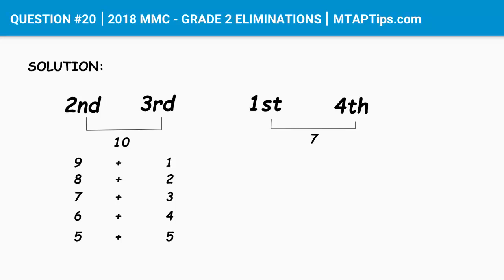Let's take a look at the other side for the first and fourth monkey. We could say they have eaten 4 and 3 bananas respectively, or maybe 5 and 2, or maybe 6 and 1, but again, we're not sure yet.